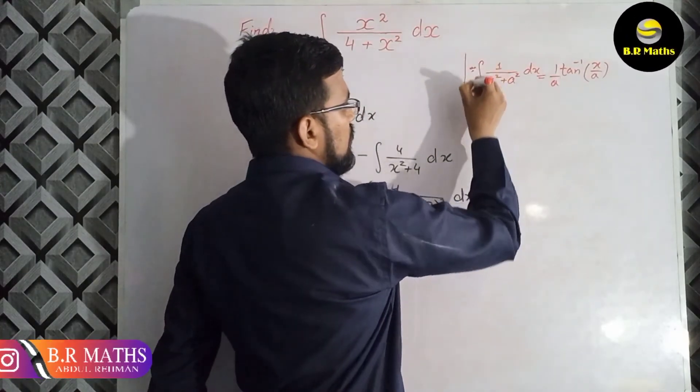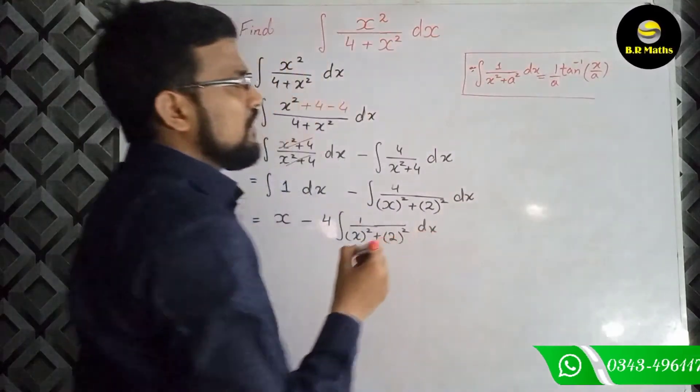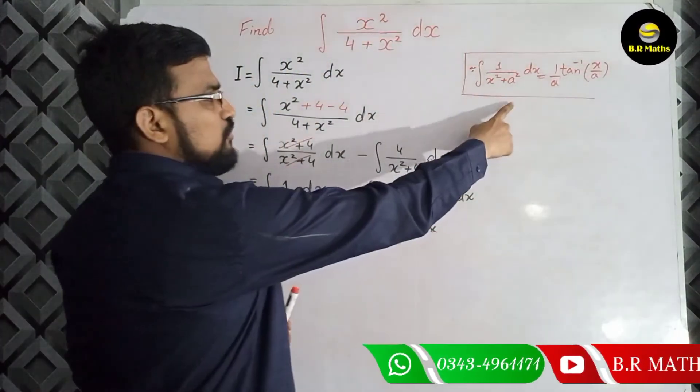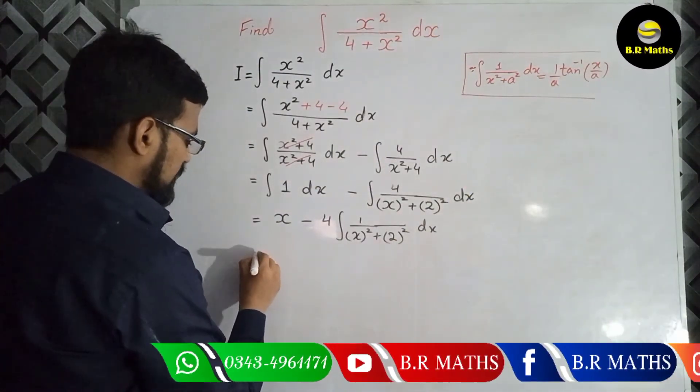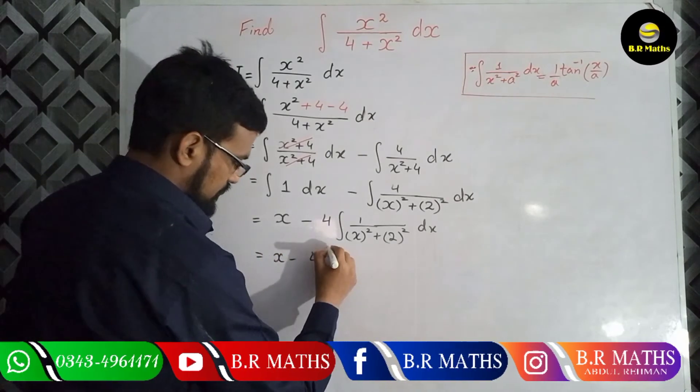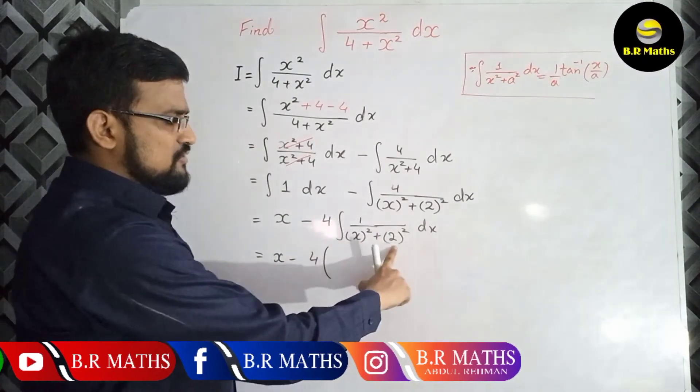Of 1 over a square plus x square. So according to this rule, you can apply this formula at this stage, and the final result will be: 4 here, x square plus 2 square. 2 is, it means it's replaced as a, so 1 over 2 and tan inverse x over 2 plus c.